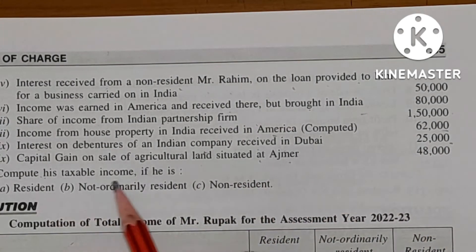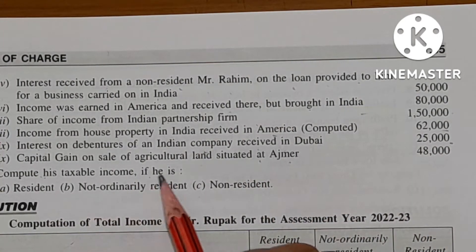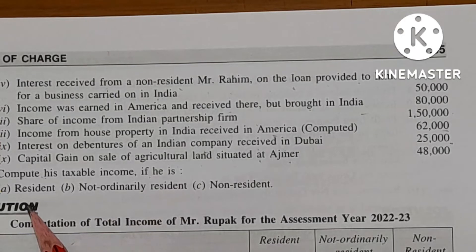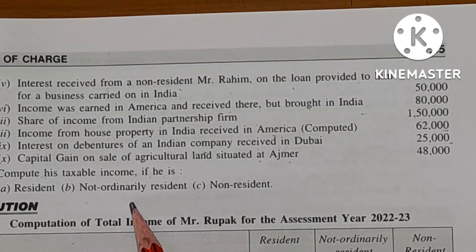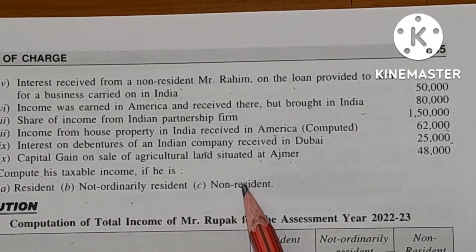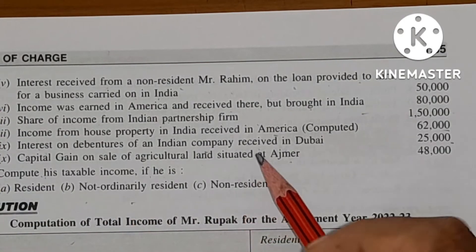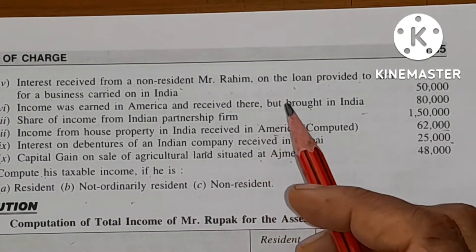Compute his taxable income if he is: resident, not ordinary resident, and non-resident. So in this case there are incomes under one of these three categories.